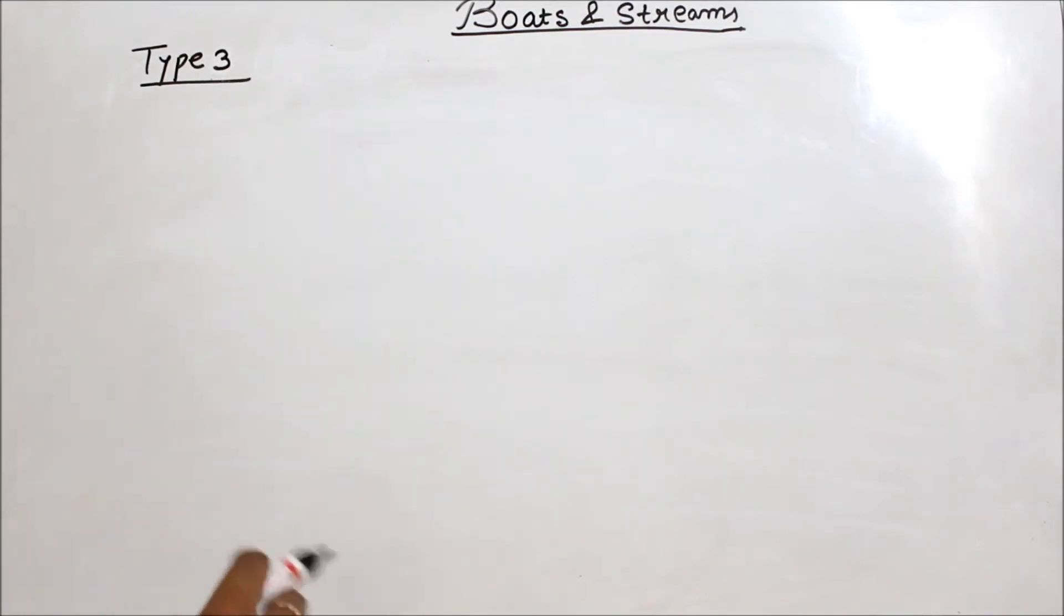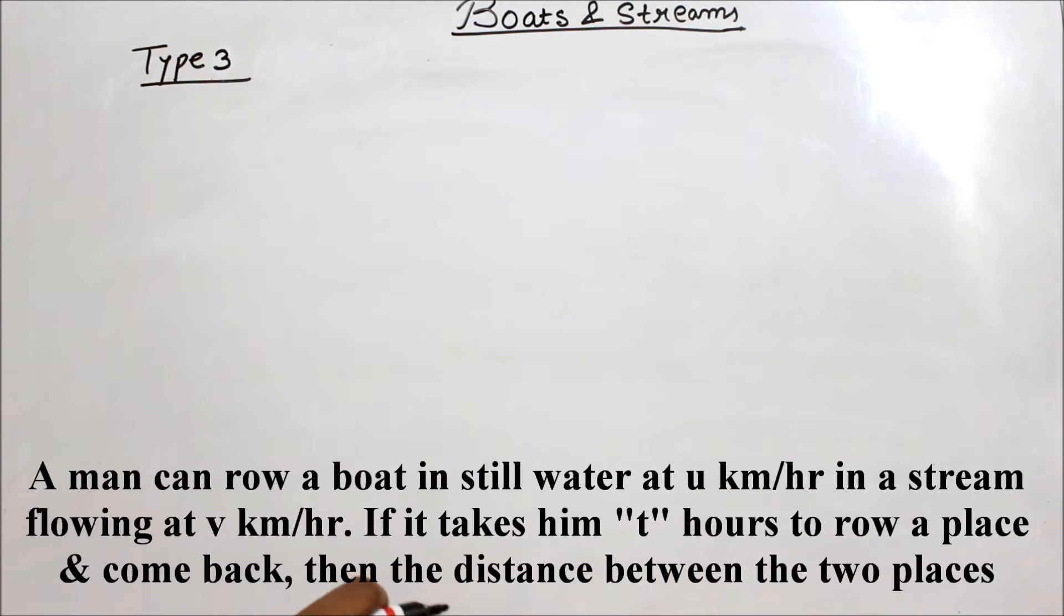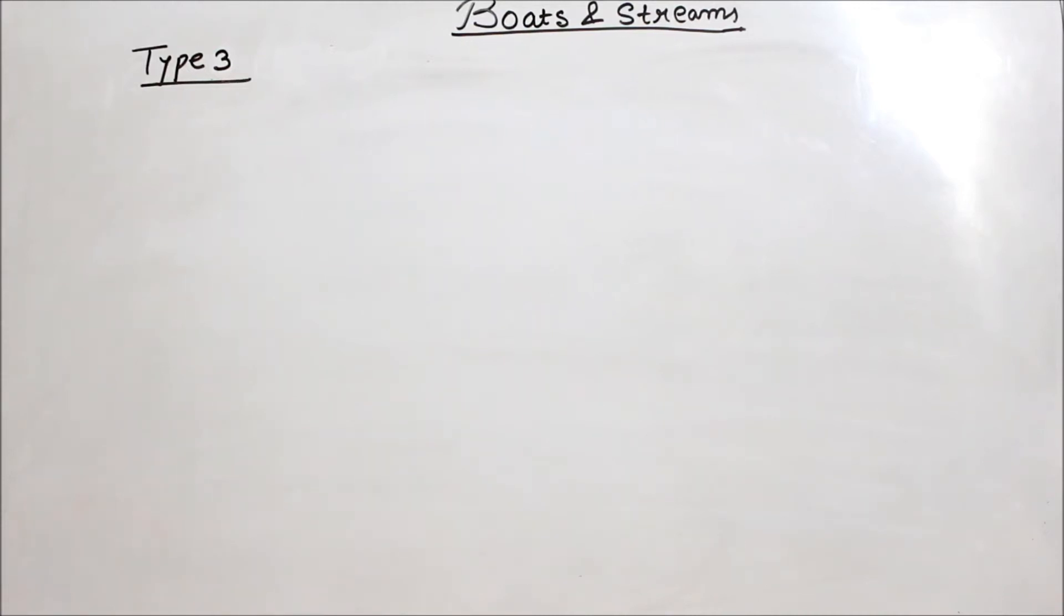Finally, we will remember the formula so that similar problems you can easily solve in a very short time. The problem is that a man is rowing a boat in still water at u km per hour in a stream which is flowing at v km per hour. If it takes him t hours to row to a place and come back, then the distance between the two places how do we do that?